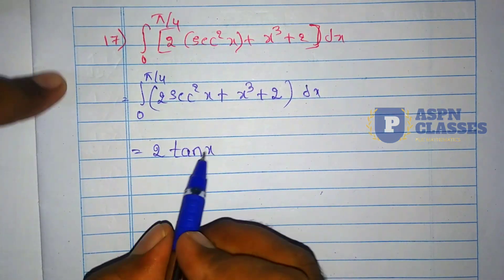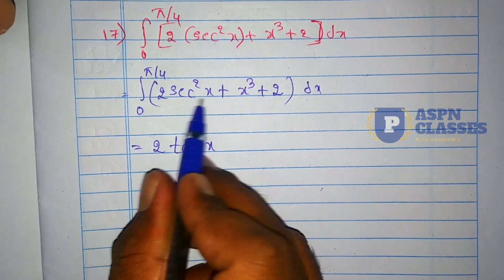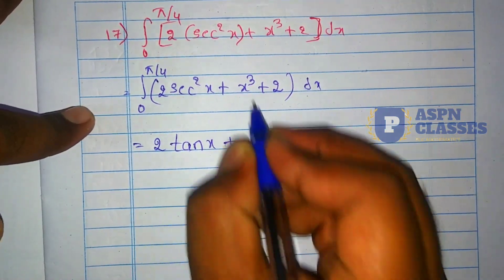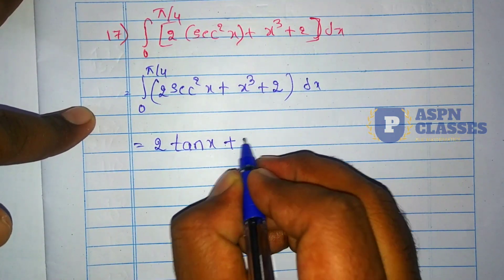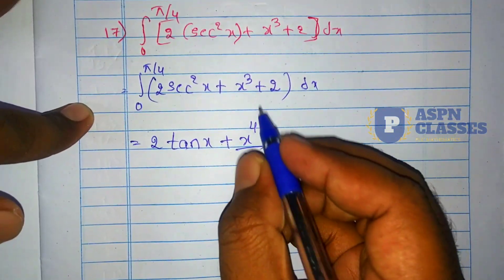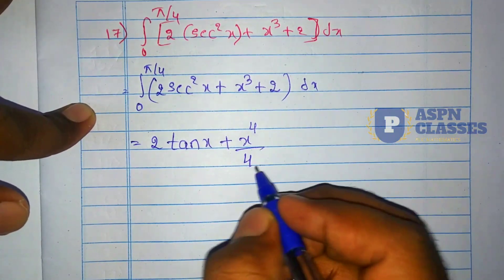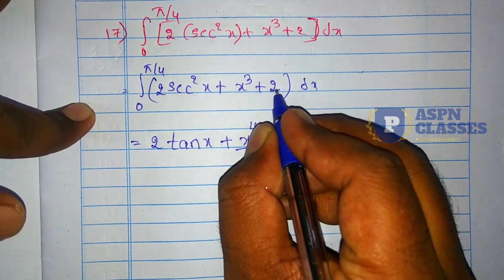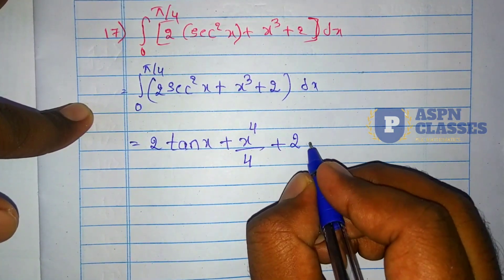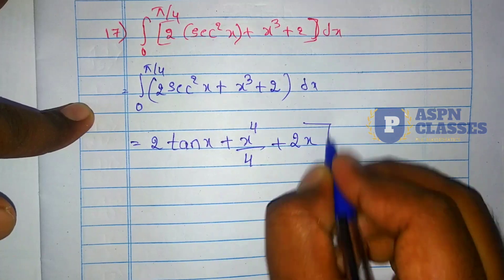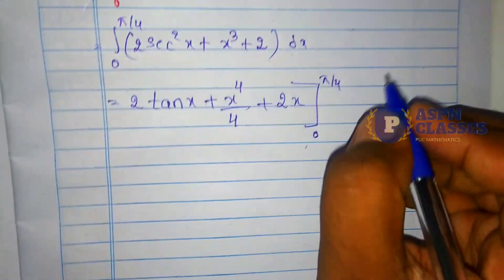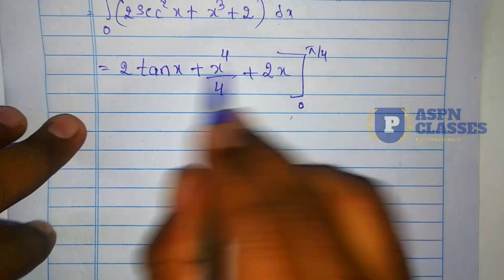The integration is straightforward. 2·sec²x integrates to 2·tan x, since the differentiation of tan x is sec²x. For x³, using the formula xⁿ integration is x^(n+1)/(n+1), so x³ integrates to x⁴/4. Plus 2 integrates to 2x. The limit is 0 to π/4.